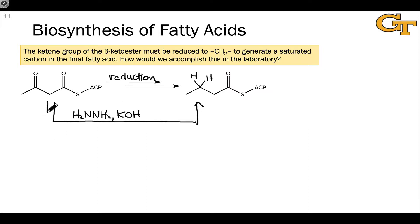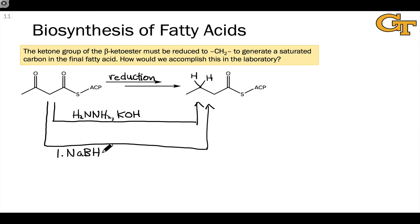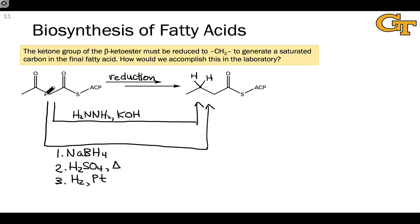There are also multi-step approaches. We could use sodium borohydride to first reduce the ketone to an alcohol, hopefully not touching the thioester, and then eliminate water from the resulting beta-hydroxy compound using aqueous H2SO4 and heat. This would give an alpha-beta-unsaturated carbonyl, and then using hydrogenation conditions — H2 and a metal catalyst — to convert the alkene into an alkane. This last approach is most analogous to the way nature does it, although nature doesn't make use of these very strong reducing agents or strongly acidic conditions.